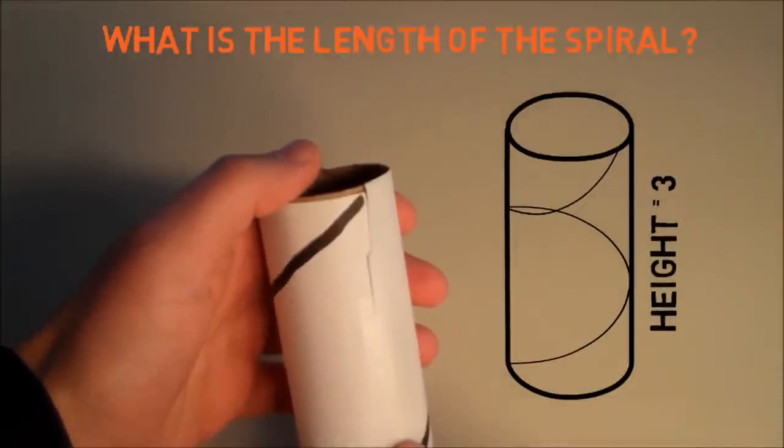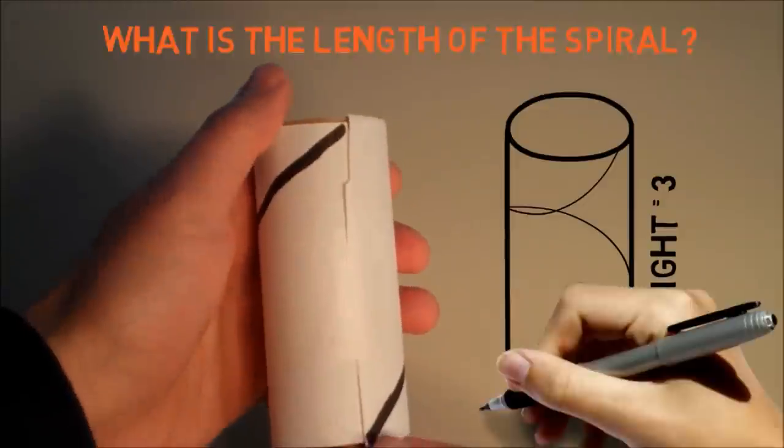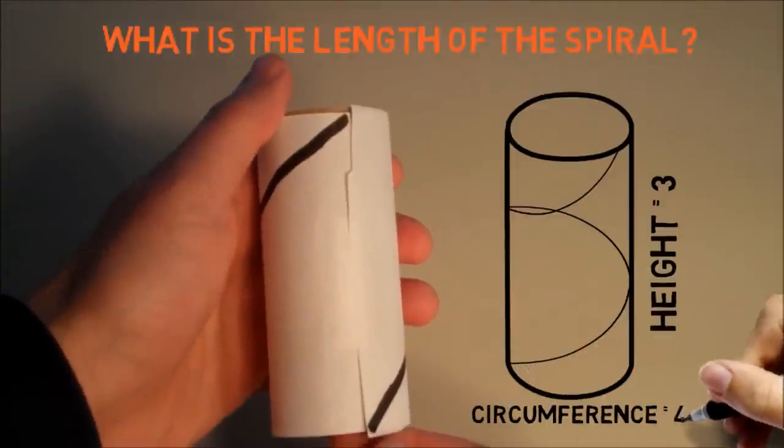We're going to say the cylinder has a height of 3 and the circumference of the base will be equal to 4. Can you figure out what the length of the spiral is? Go ahead and give it a try.